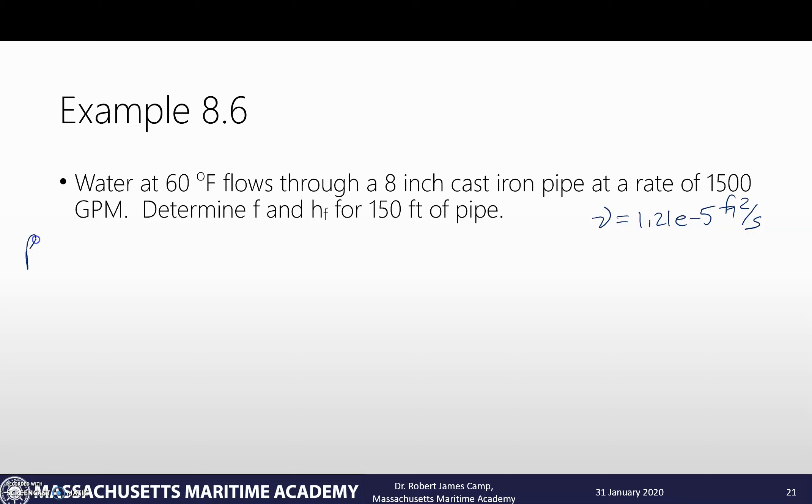So how do we calculate Reynolds number? Well, it's the Reynolds number based on diameter. It's velocity diameter over kinematic viscosity. We do not have velocity because our velocity is in GPM, which is a volumetric flow rate. So before we can calculate that, we will need to calculate our velocity.